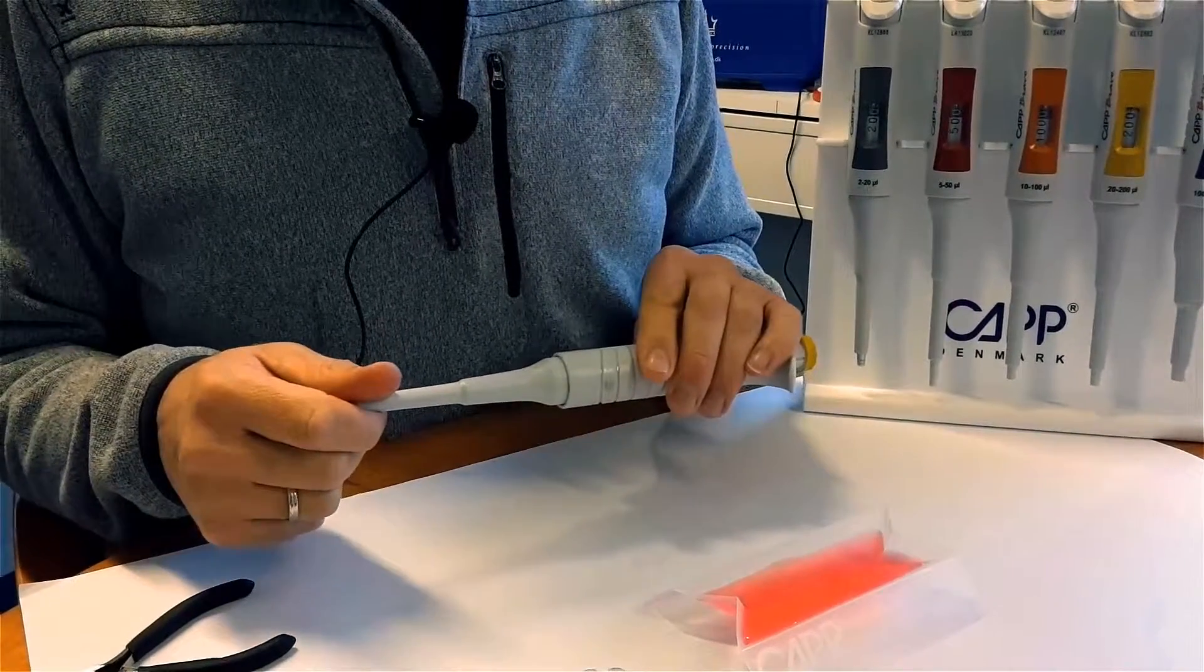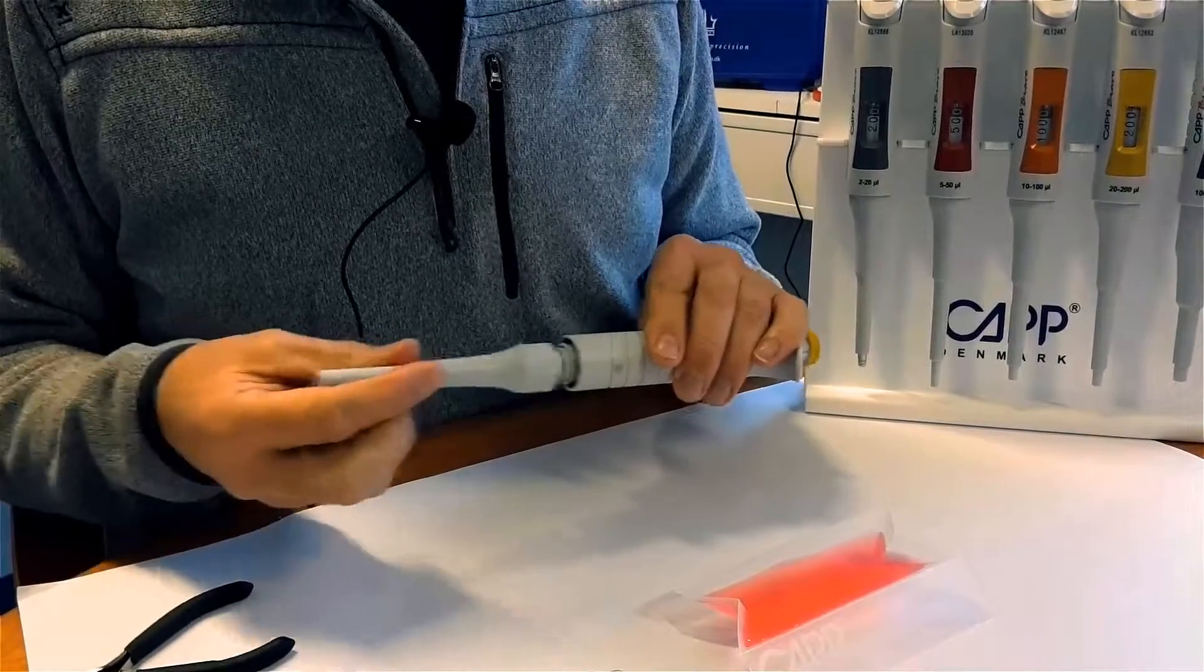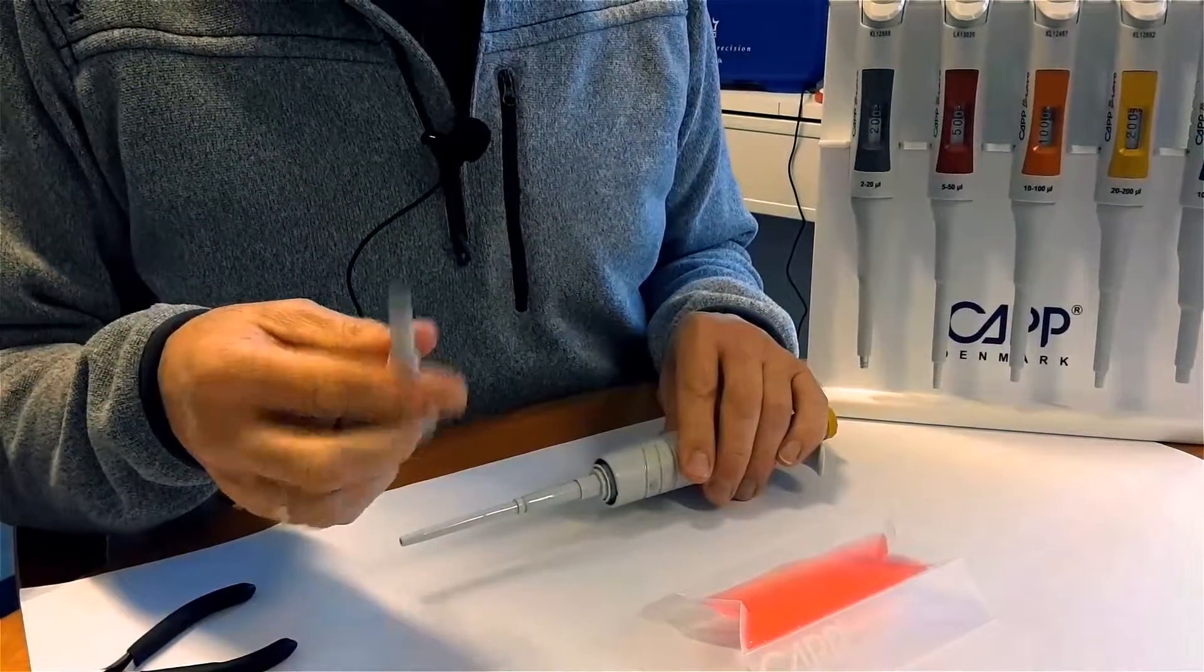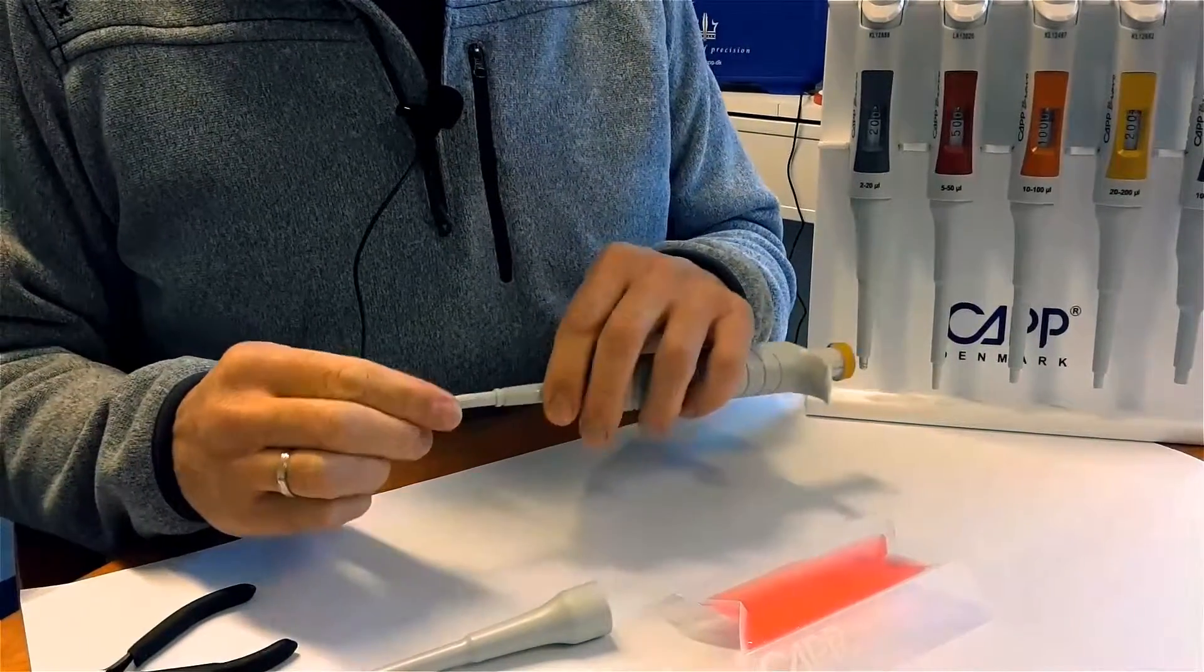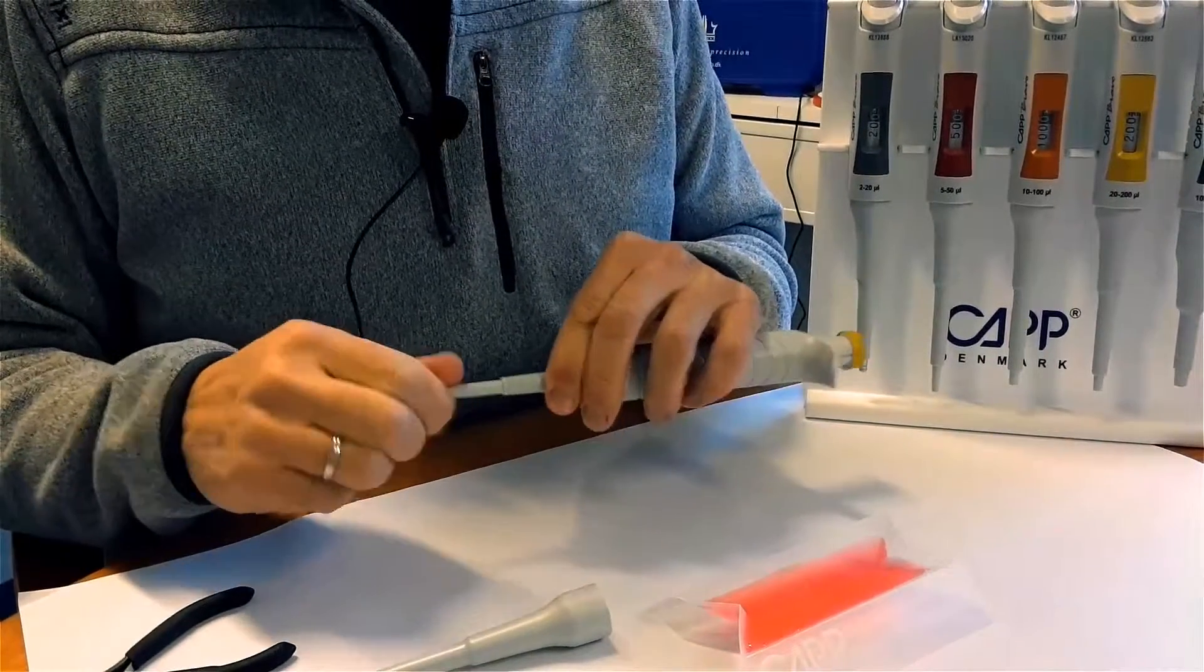Take the tip ejector off the pipette by gently unscrewing it. Check for visual signs of contamination. Verify that the tip cone lower part is firmly connected to the upper part and test for leakage once again.